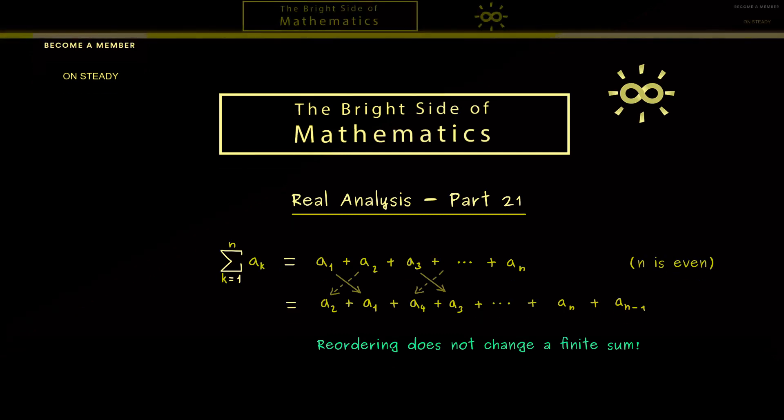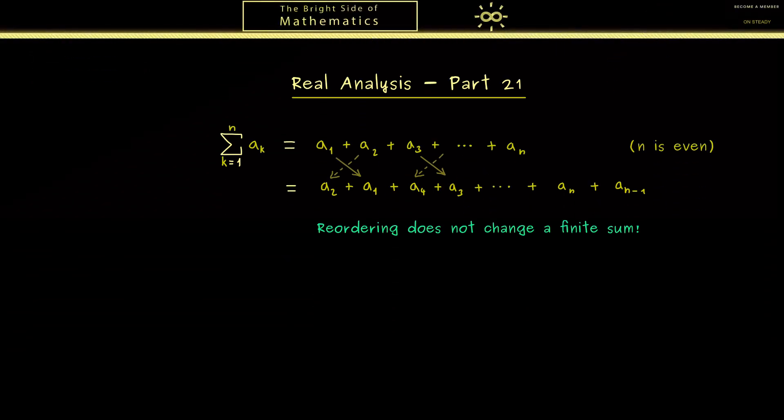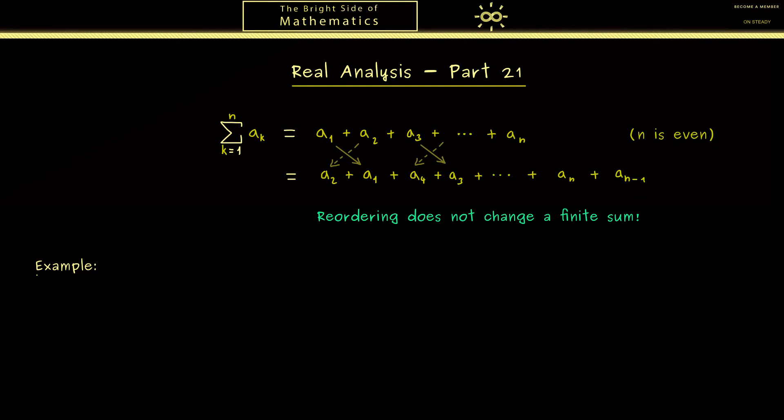There, a reordering can indeed change the value. In order to see this, let's immediately look at an example. Let's take this well-known series where we add plus and minus 1. We've already shown that it is not convergent. However, we can show that the sequence of partial sums has two different accumulation values, 0 and 1.